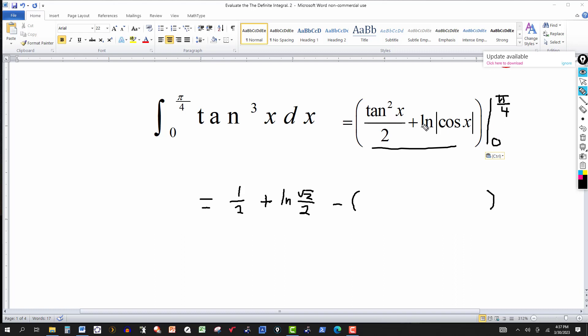And then we evaluate those components at 0. So the tangent of 0. You can look at that as 0 radians or 0 degrees. It's going to be 0. You squared. You still get 0. Divide by 2. That's still going to be 0. And now we plug in 0. Cosine of 0 is 1. Absolute value of 1 is 1. So I have the natural log of 1 is 0. So the second part gets wiped out.